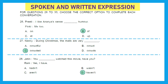Question 28: 'Jatin: you dash watched this movie, have you? Ram: yes, I have.' The right answer is option D — 'you haven't watched this movie, have you?' And Ram said yes, I have.